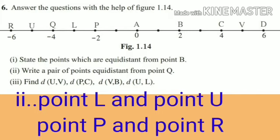Second question: write a pair of points equidistant from point Q. Same as question number one — observe the line from point Q. The equidistant points are: point L from one side and point U from the other side; also point P and point R. These points are equidistant from point Q.